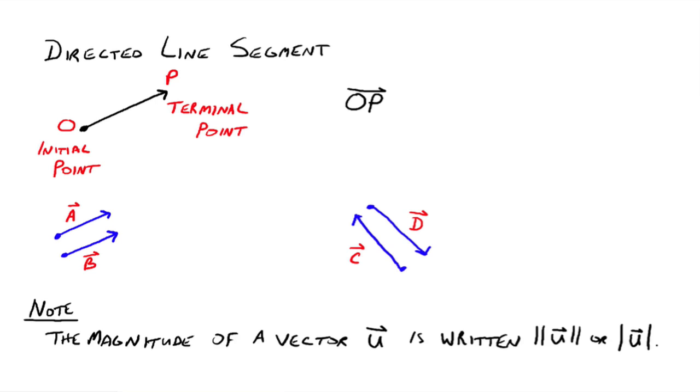Let me make a little note here. We've got some notation. The magnitude of a vector U is written, these double vertical bars of U, or just one set of vertical bars with the U in there. This almost looks like the absolute value situation. But it's not absolute value.